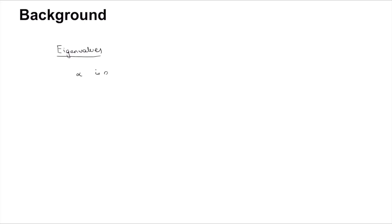Before we start the question, a little bit of background on eigenvalues: alpha is an eigenvalue of matrix A if there exists a non-zero vector v such that Av is equal to alpha·v.